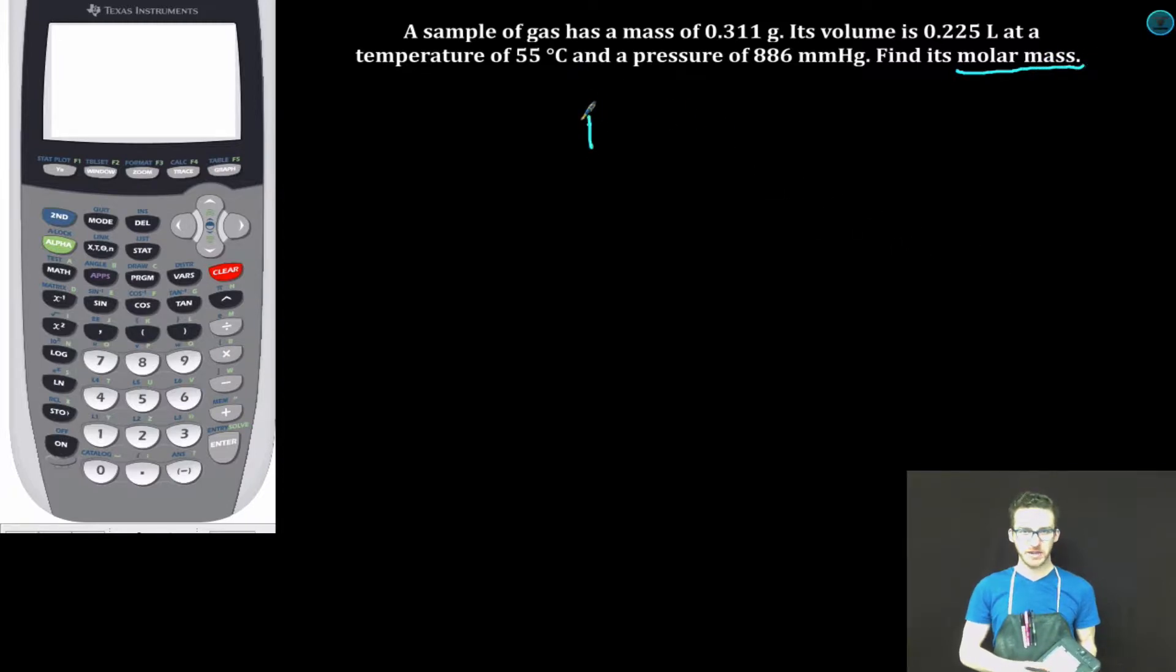All right, coming back to my good friend PV=nRT. But once again, let's remember to sub in mass over molar mass for our number of moles. Now, in this case, we're looking for the molar mass, so I'm gonna multiply each side by molar mass and divide each side by P and V.